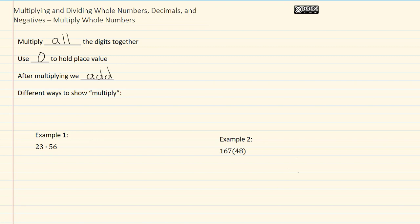Some different ways to show multiply are 2 times 3, or 2 dot 3, or 2 next to parentheses with a 3 inside.